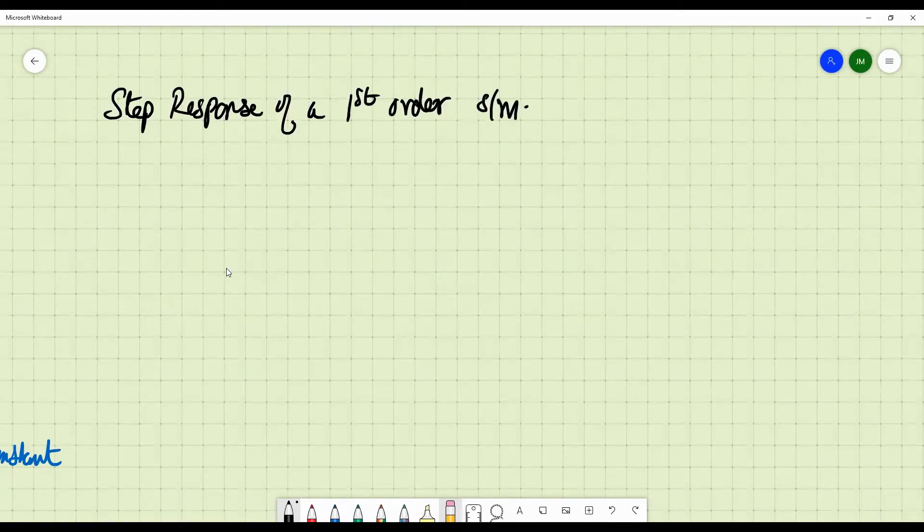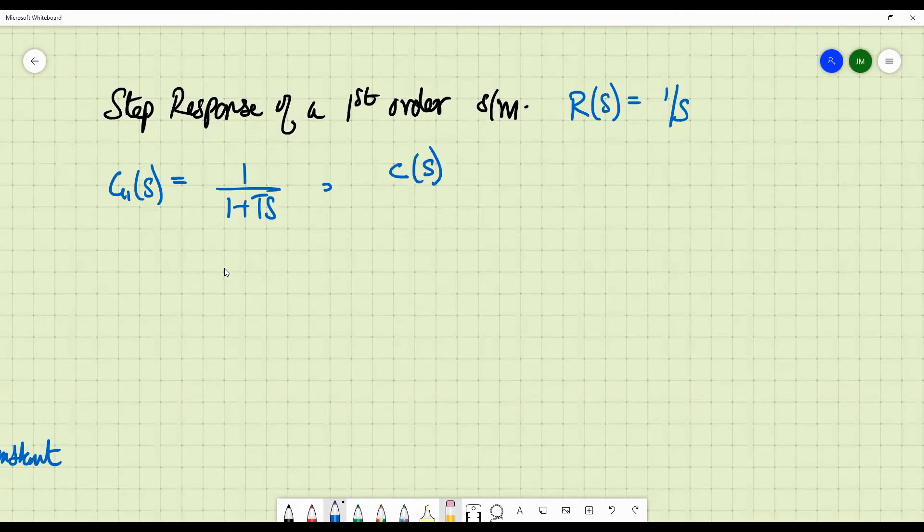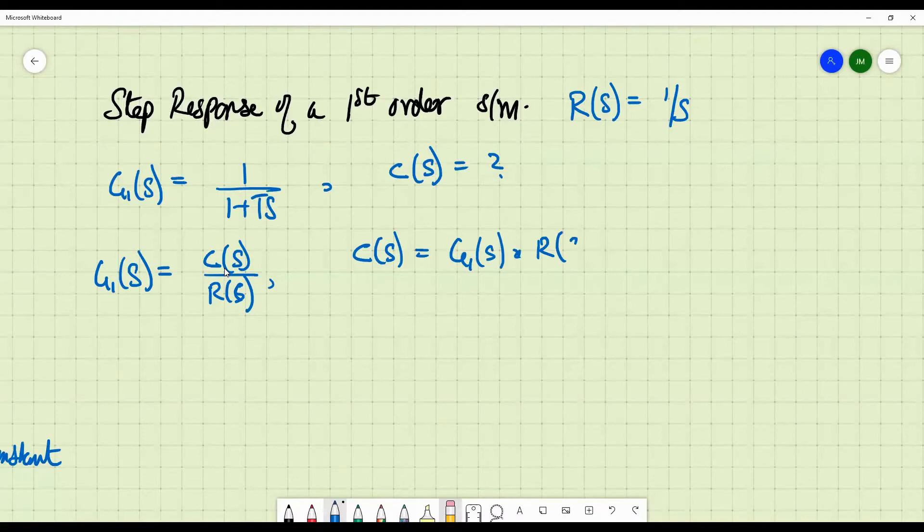We have already seen that G1 of S is 1 by 1 plus T S. For a step response, we have R of S, which is the input, is equal to 1 by S. Given R of S and G1 of S, the question is, how do you find out C of S? Since we know G of S is nothing but output by input, Laplace transform, rearranging, you will get C of S is equal to G1 of S multiplied by R of S.